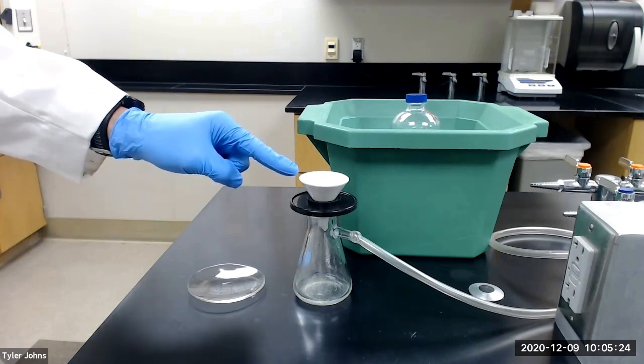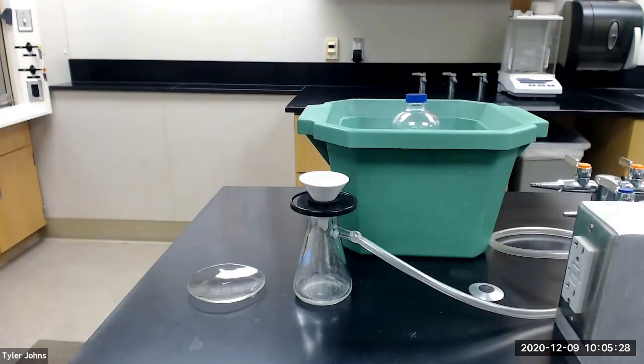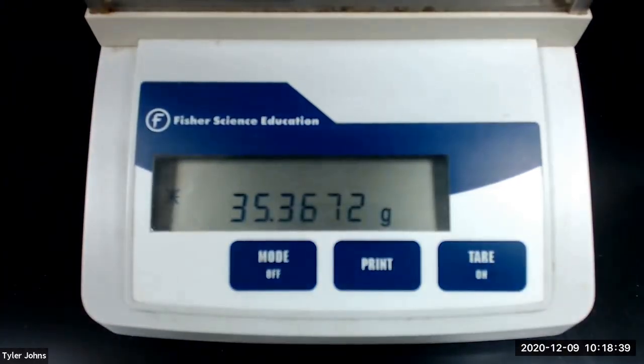As our crude benzoin crystals continue to dry, we will next pre-weigh a watch glass. The mass of the pre-weighed watch glass is 35.3672 grams.